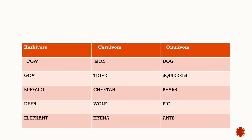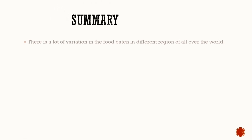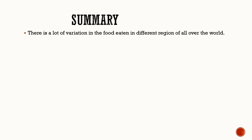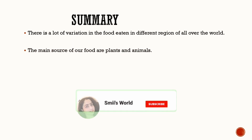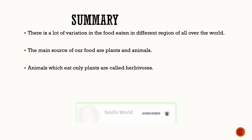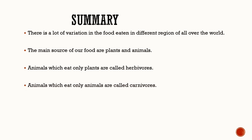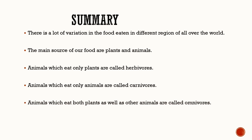Here is a list of some herbivores, carnivores, and omnivores. Now we are concluding, so let's go through the summary. There is a lot of variation in the food eaten in different regions of the world. The main sources of our food are plants and animals. Animals which eat only plants are called herbivores. Animals which eat only animals are called carnivores. Animals which eat both plants as well as other animals are called omnivores. I hope all of you understand this lesson — please stay tuned for the next class. Thank you.